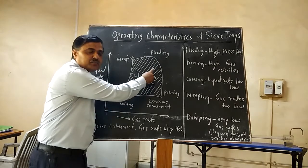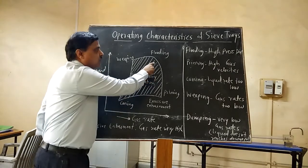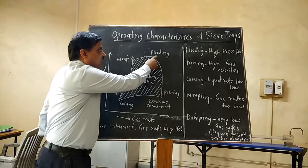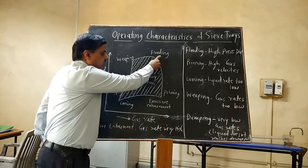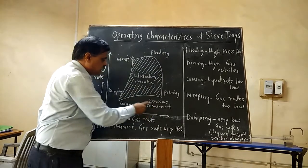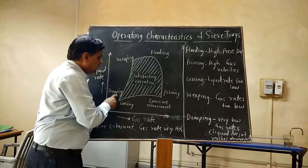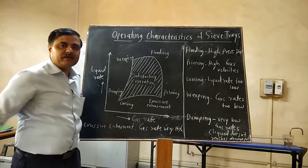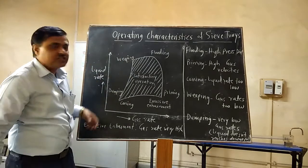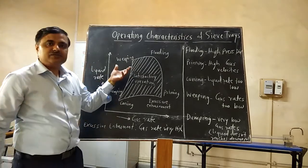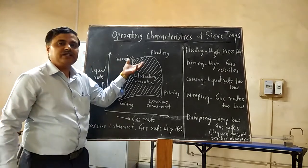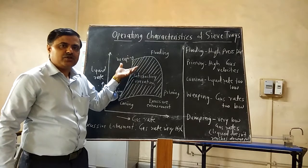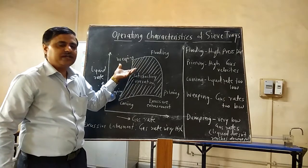Outside the shaded portion, different difficulties arise. For example, flooding, priming, excessive entrainment, coning, dumping, and weeping. These are the unsatisfactory conditions for the sieve tray column.